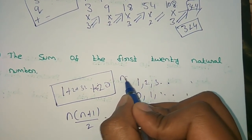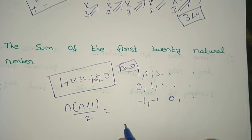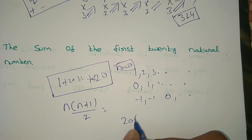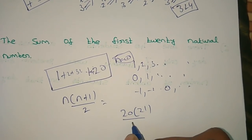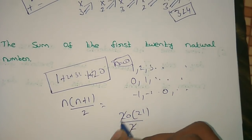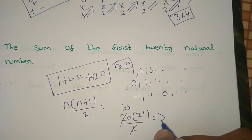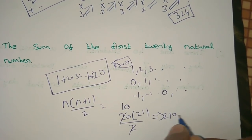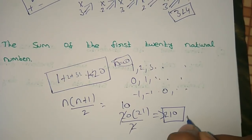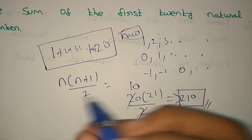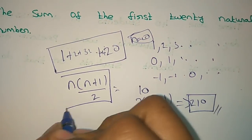So n equals 20. So 20 plus 1 is 21. 21 by 2 — so 2 is 10. So 20 × 21 / 2 = 210. This is a small formula. You can use it in the exam.